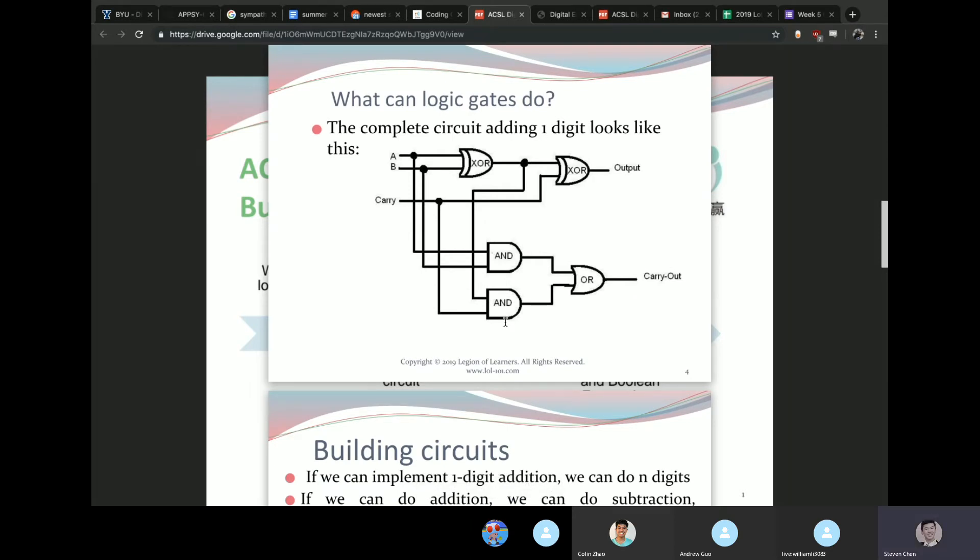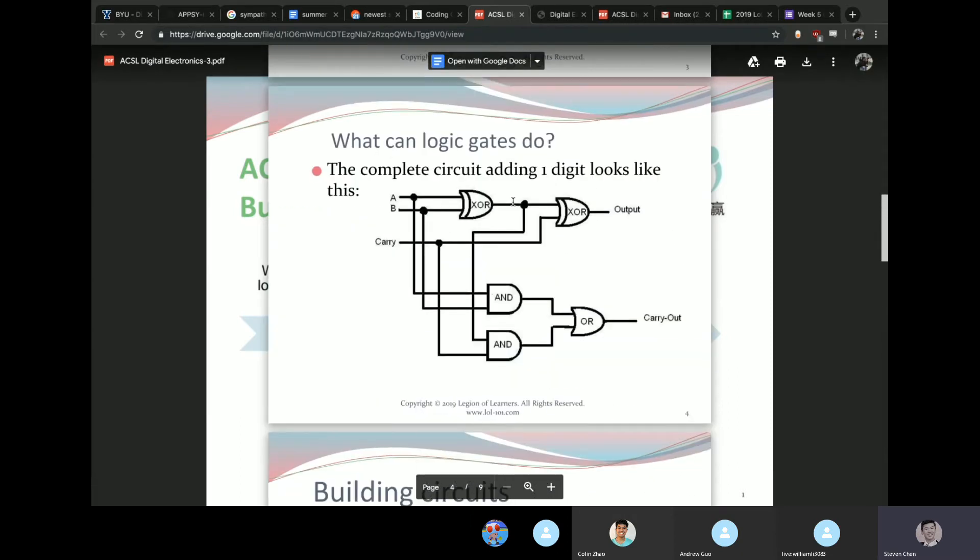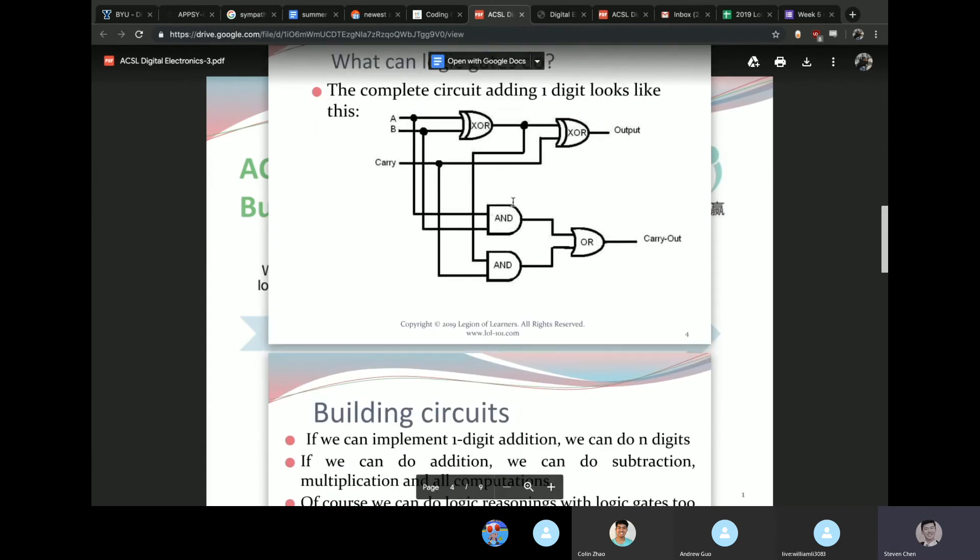So the complete circuit for adding one digit looks something like this. Again it's very convoluted, very complicated, but this is essentially what goes on inside of the computers, all this just to add one digit. If this is the implementation for one digit addition, you could do as many as you wanted, just with a bunch of these.